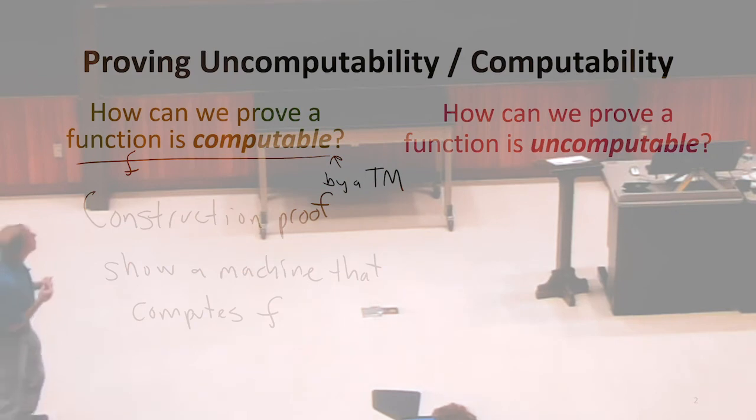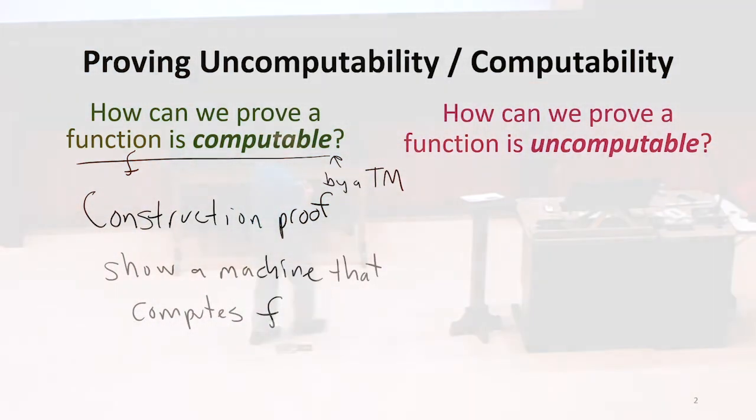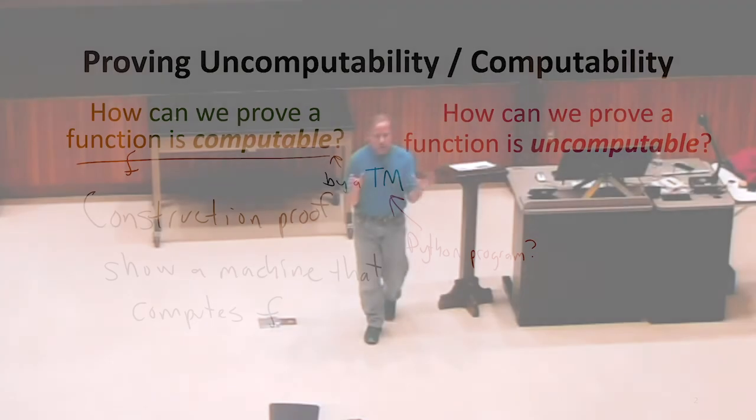Good question. So what does it mean to do a construction proof? So if our goal is to show a Turing machine, would it be enough to show a Python program? What would make you really convinced that if you show a function, show Python code that computes it, that that's a satisfactory answer to prove something is computable by a Turing machine?